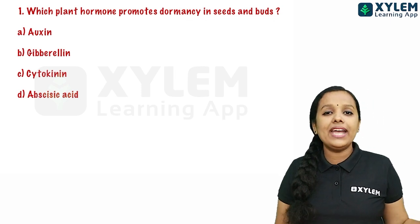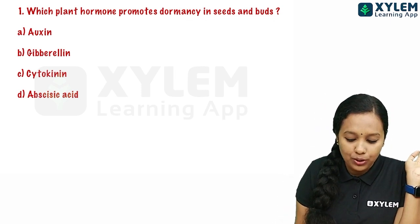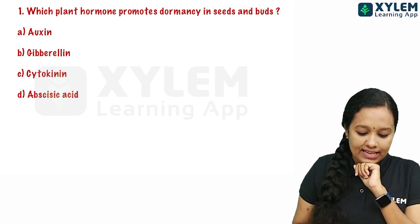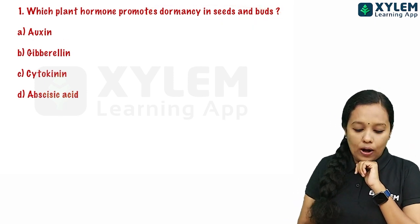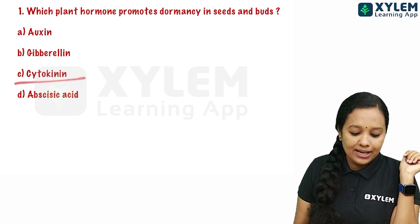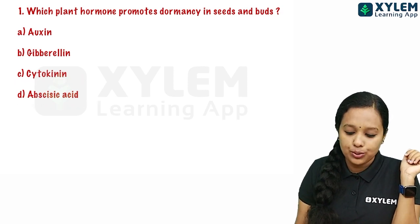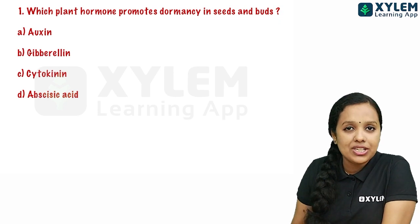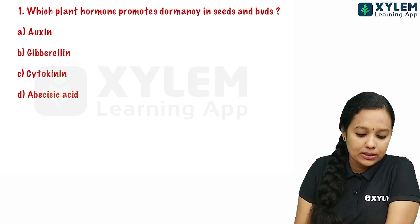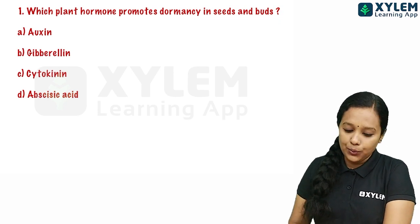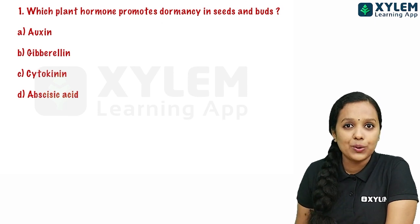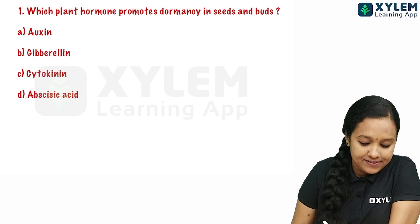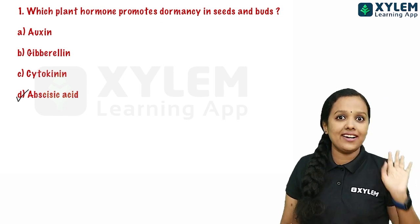Our first MCQ question: if you have a plant hormone — is it auxin? No. Gibberellin? No. Cytokinin? No. The answer is Abscisic acid. Option D is the correct answer.